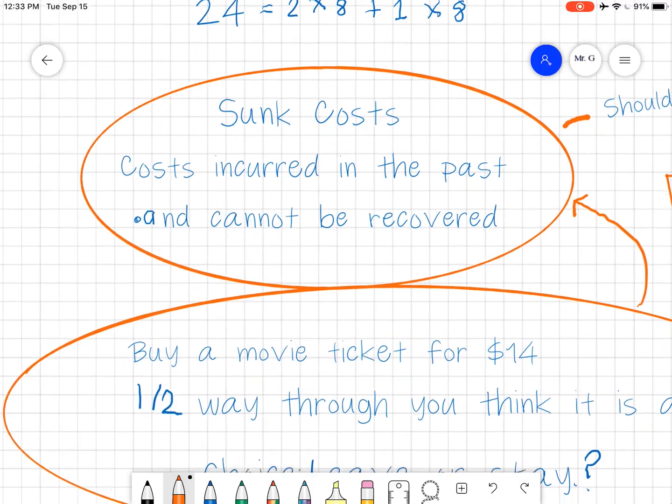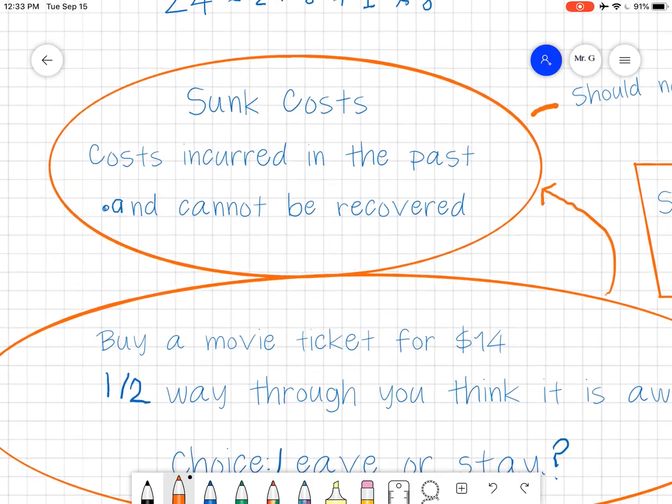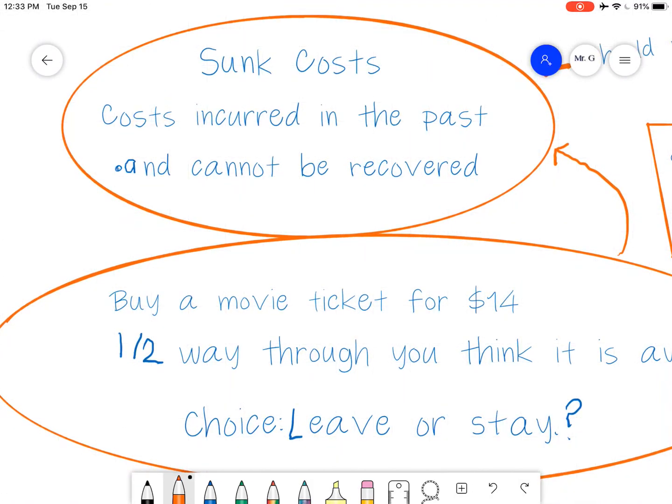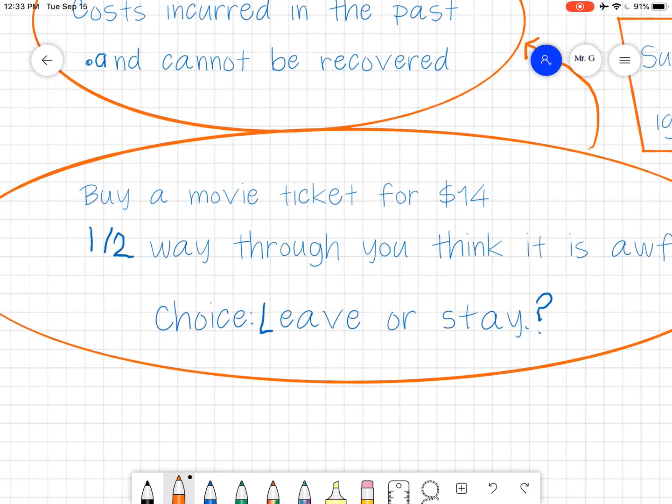So the next part we're looking at is sunk costs. Now, sunk costs are costs that incurred in the past and they cannot be recovered. You made a choice. And now you're at a point where you have to make another choice. The cost was already incurred in the past. The opportunity cost was incurred in the past and it cannot be recovered. So we'll go through the example.